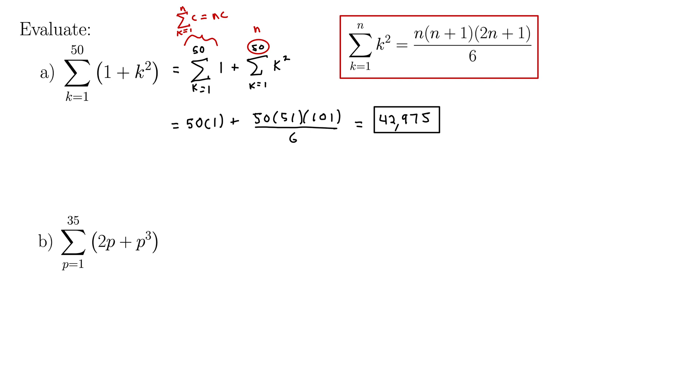Let's try it together. In the second example, we have the sum as p runs from 1 to 35 of the quantity 2p plus p cubed.